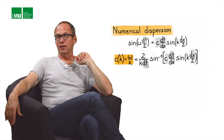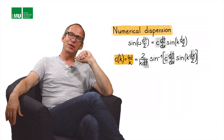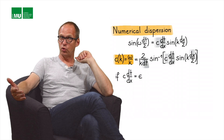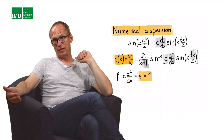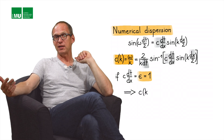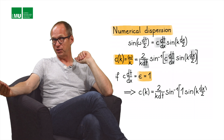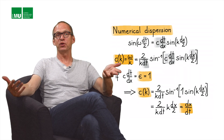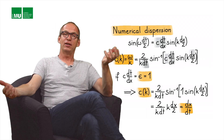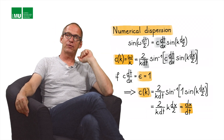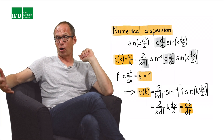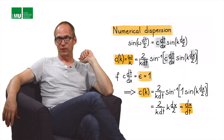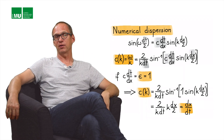Dividing both sides by wave number k gives us a phase velocity c equals omega over k, but this time the phase velocity actually depends on the discretization scheme. There is one special case: when c·dt/dx equals 1, you exactly recover the analytical solution. However, that's an academic case since in practice we have space-dependent velocities and complex models.